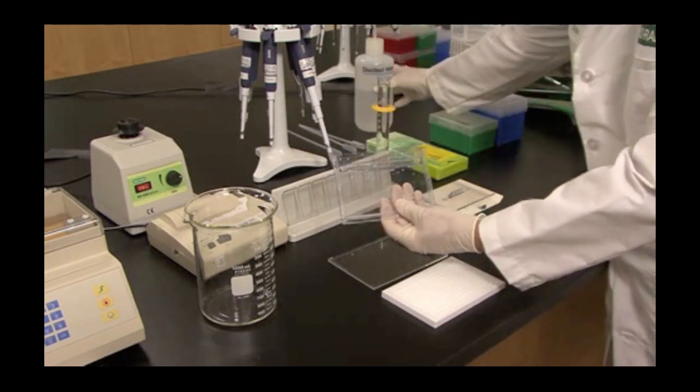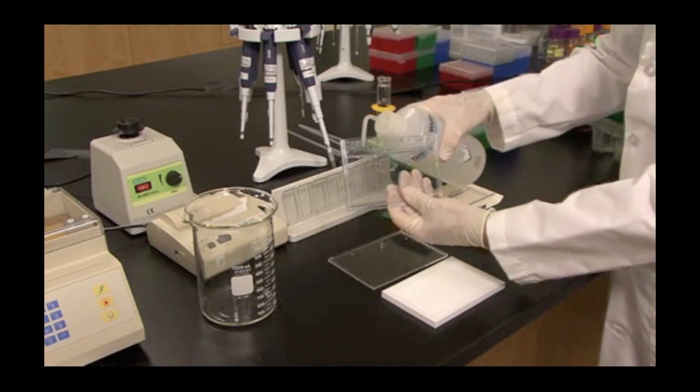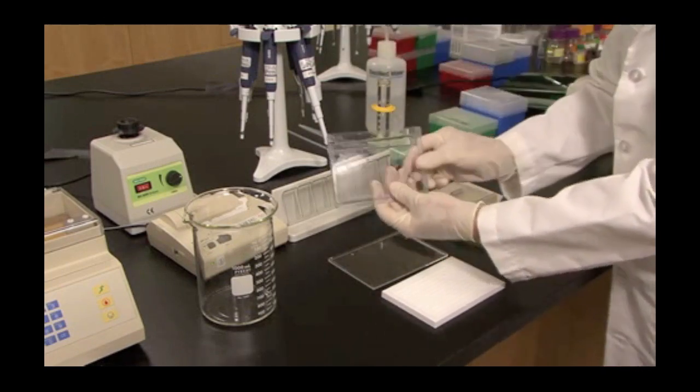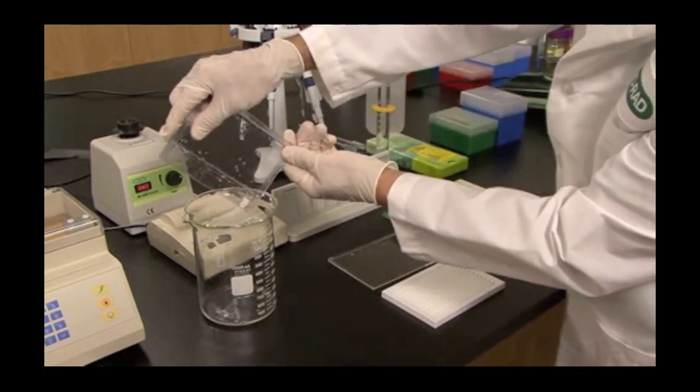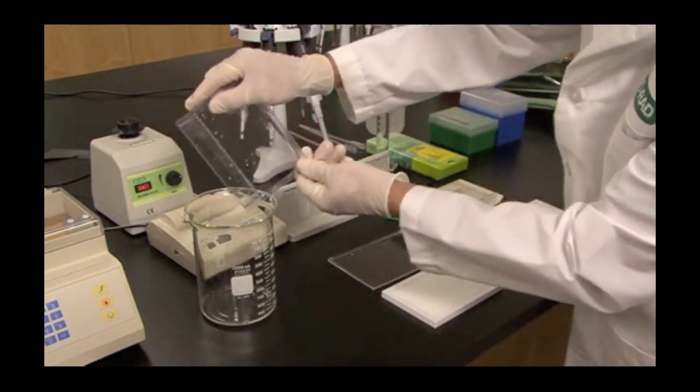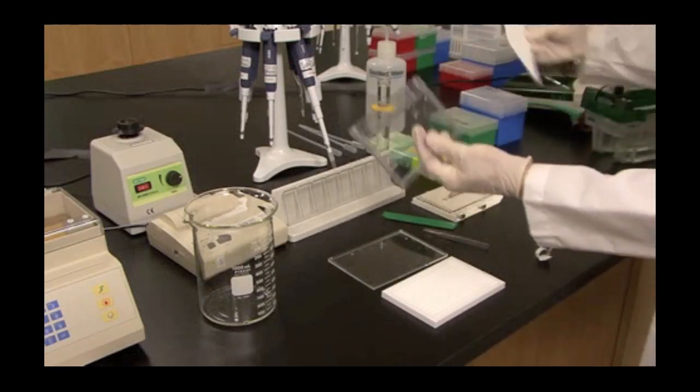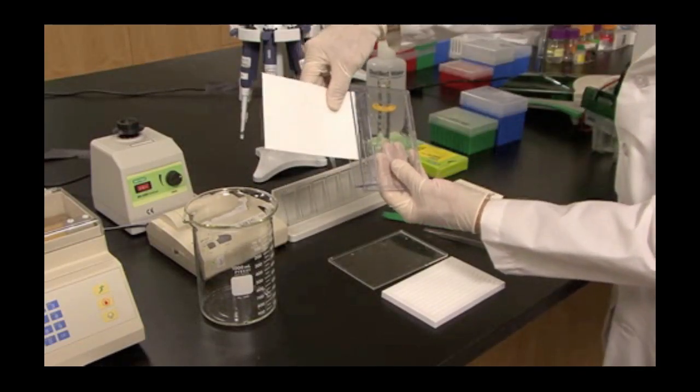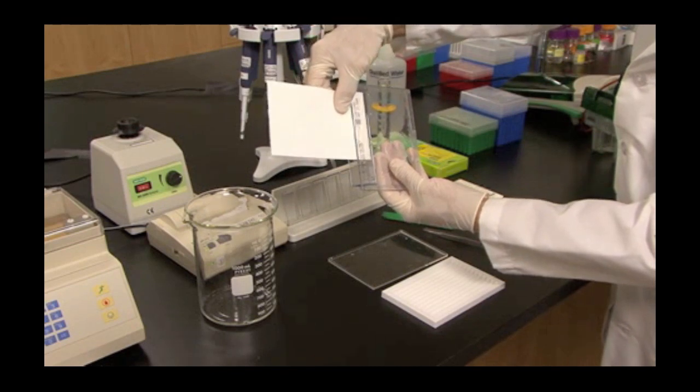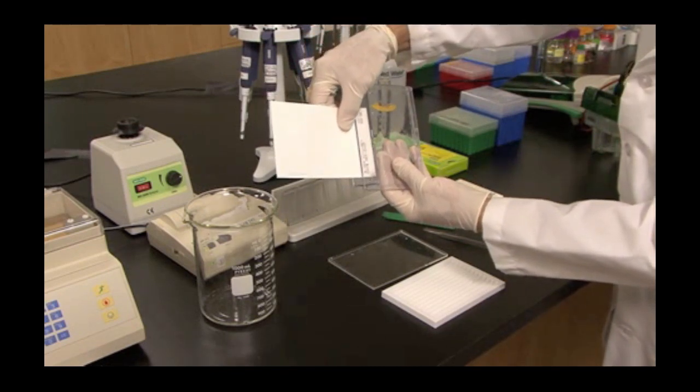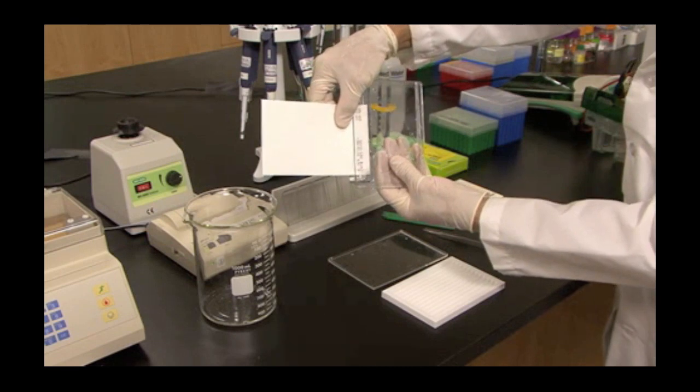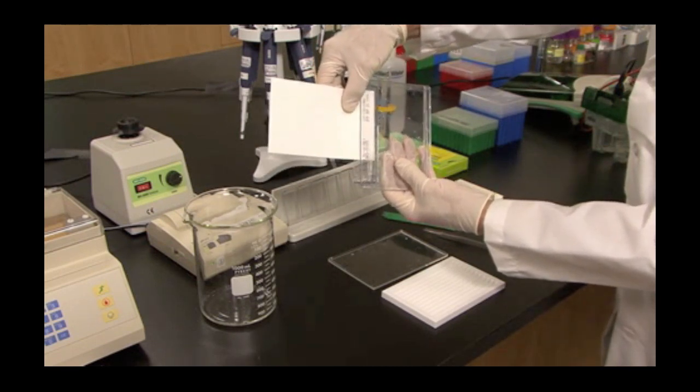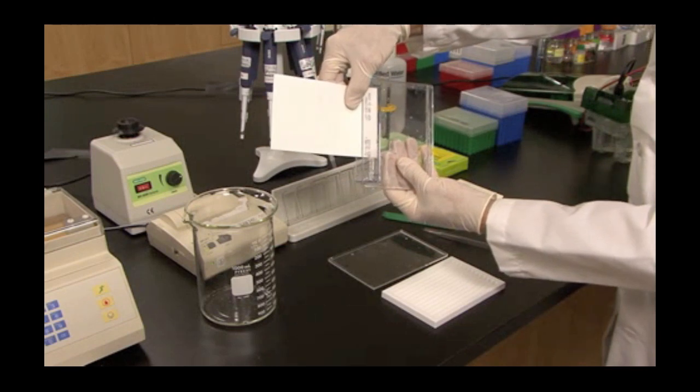Rinse the wells with good quality DI water. Tap the water out into a beaker, and then place the gel sideways and remove with a piece of filter paper the excess water from the wells. Be careful not to touch the bottom of the gel as it can damage the surface of the second dimension gel.